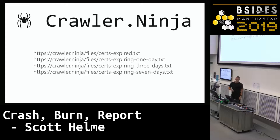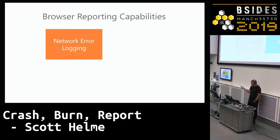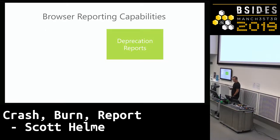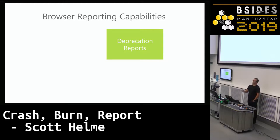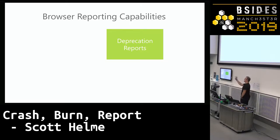It's not just about TLS and DNS — that was only one of the things you can ask the browser for. Now I'm going to look at deprecation reports. These are going to become super handy because they tell you about things that are going to stop working on your website — a future warning that something you use is going to stop working because the browser intends to deprecate the feature.